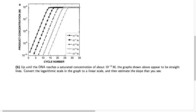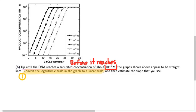Now that we understand how the scales on the axes work, we can look at the data the scientists collected and figure out what story it's telling us. We're seeing how the concentration of DNA in the PCR reaction increases as the number of PCR cycles increases. Up until a certain point, the increase in DNA looks like a straight line on this semi-log graph, until the concentration reaches about 10 to the minus 6 moles per liter, at which point the DNA starts to level off because the solution is getting saturated. Can we estimate the slope of this line before that happens?